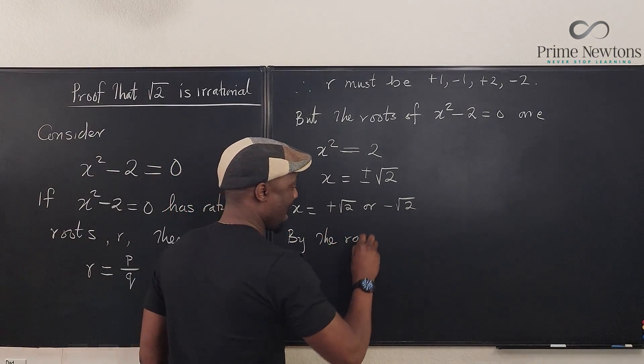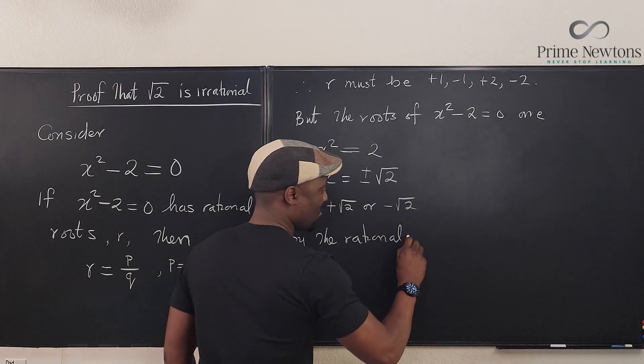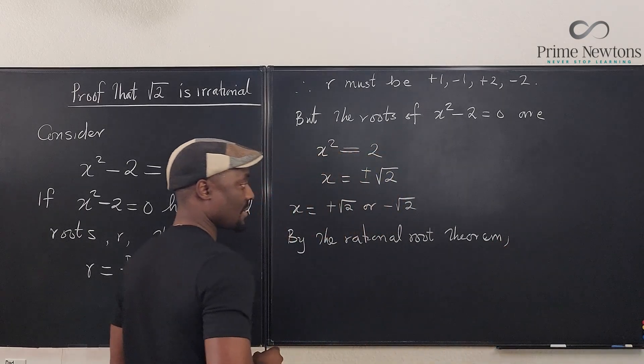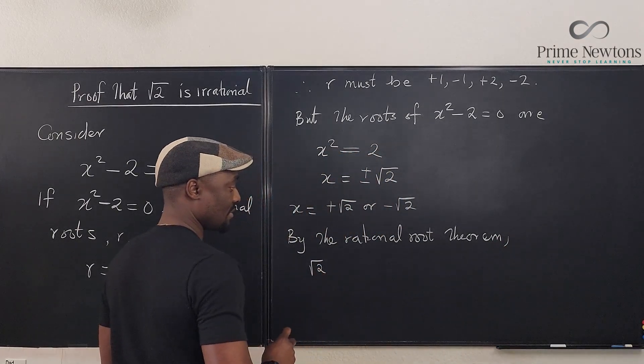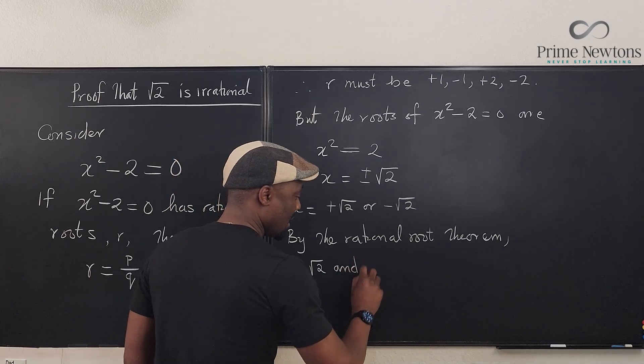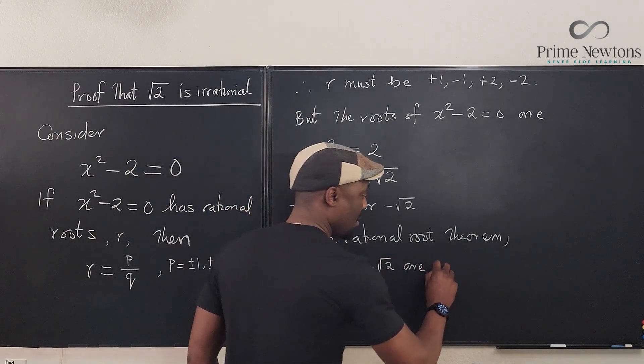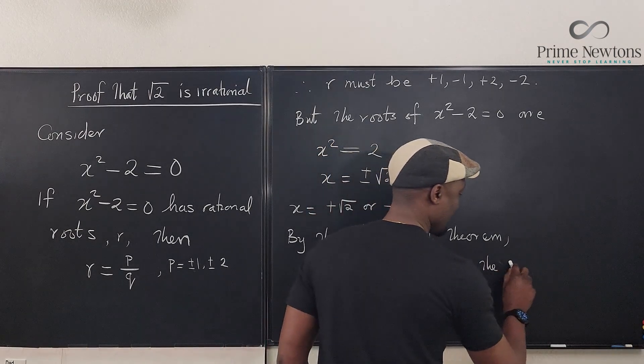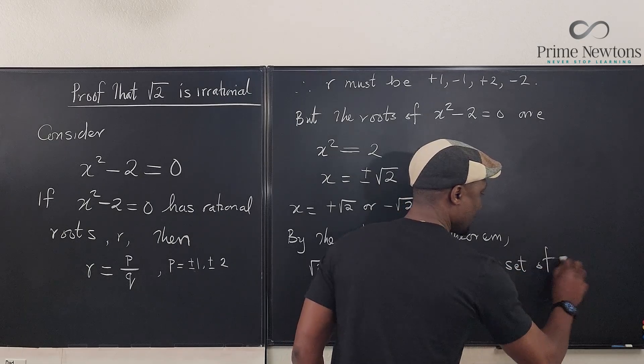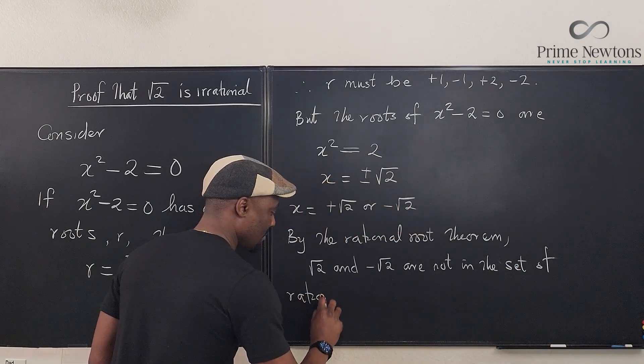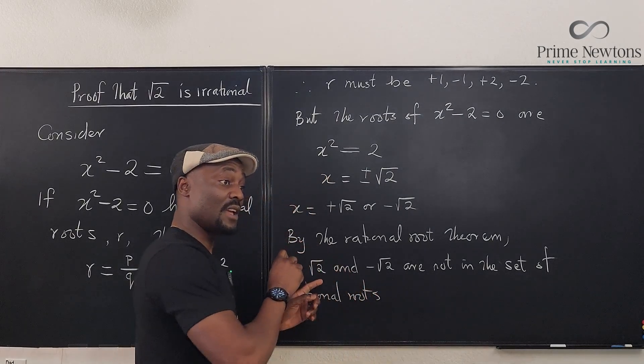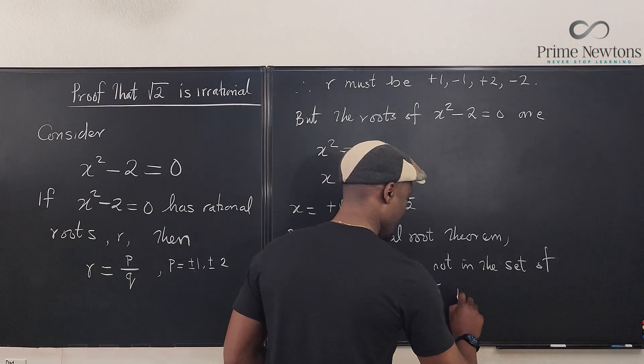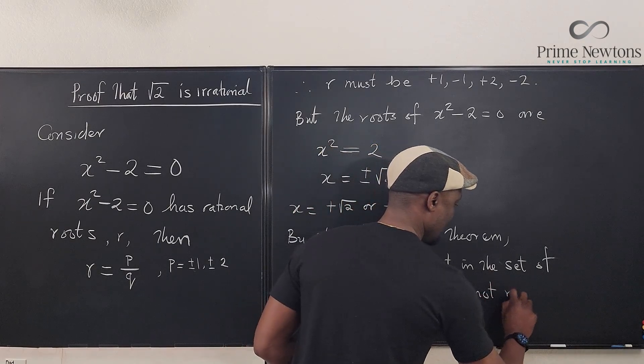By the rational root theorem, square root of 2 and negative square root of 2 are not in the set of rational roots, even though they are roots. Therefore, the square root of 2 is not rational.